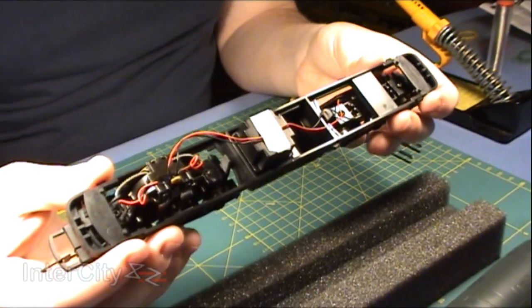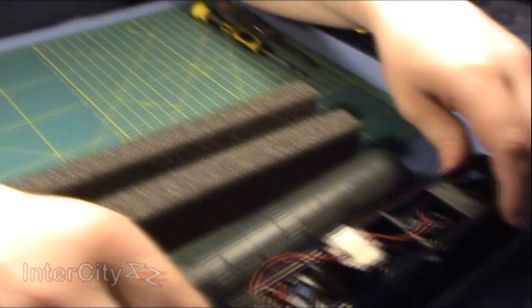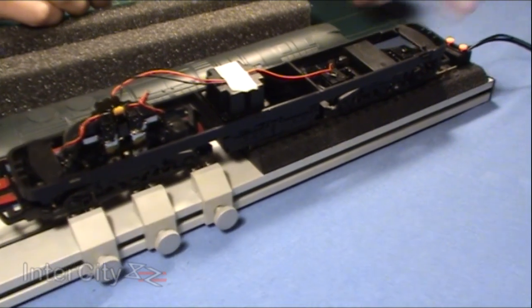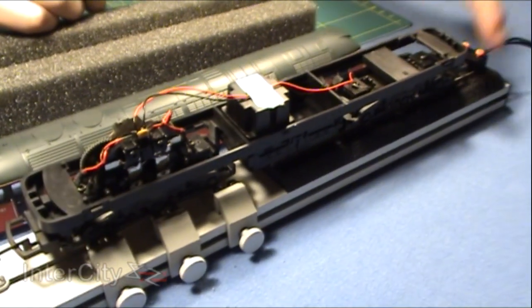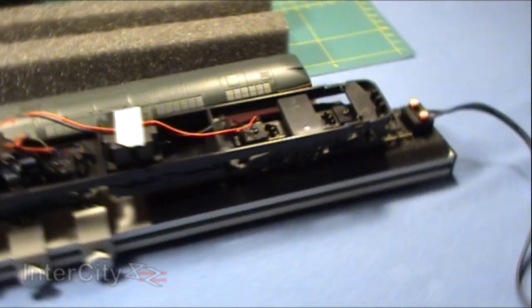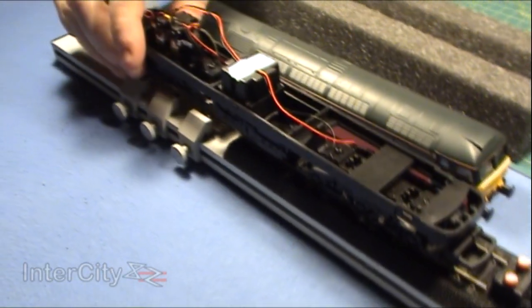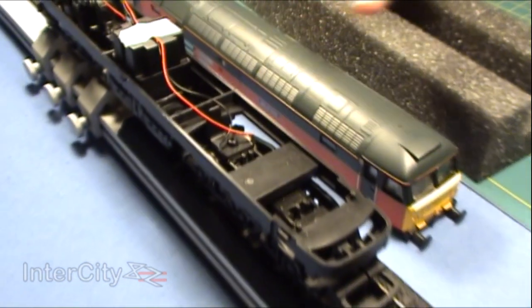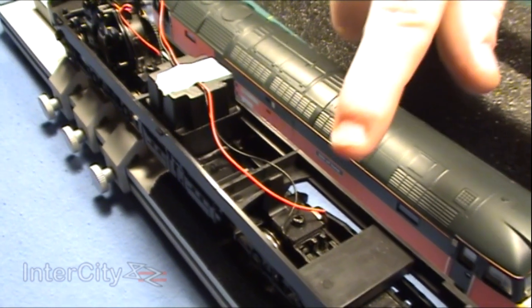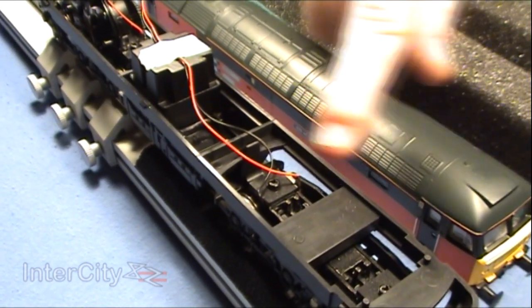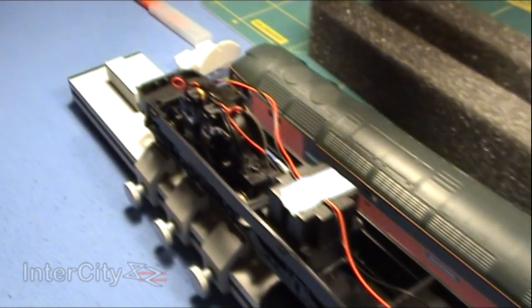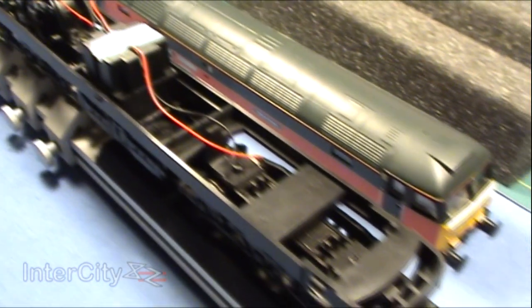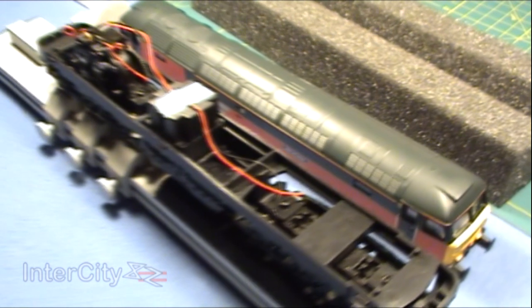As a DC locomotive, if we pop her on the track, electricity comes down the two rails—one side positive, one side negative—and the locomotive completes the circuit. Power travels from the wheels on one side through the pickup, up through the wire to the motor, passes through the motor, makes everything turn, then travels back down the black wires to the other side of the track to complete the circuit.